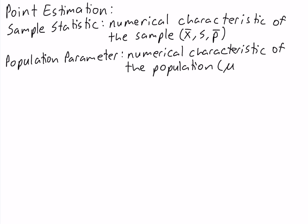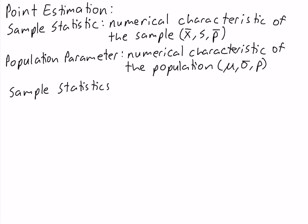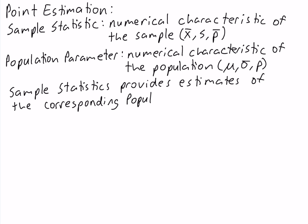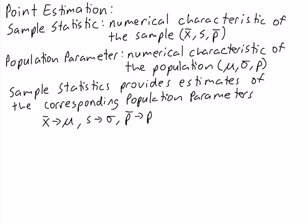Examples of population parameters are the population mean, the population standard deviation, and the population proportion. Sample statistics provide estimates of the corresponding population parameters. So the sample mean provides an estimate of the population mean, the sample standard deviation provides an estimate of the population standard deviation, and the sample proportion provides an estimate of the population proportion.